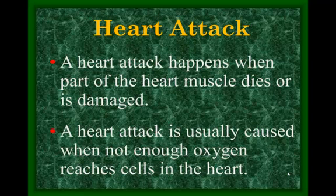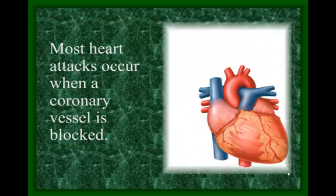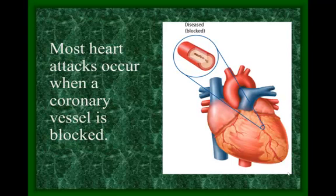A heart attack, also known as coronary thrombosis, happens when part of the heart muscle dies or is damaged, usually caused by insufficient oxygen reaching the cells. A blocked coronary artery leads to less blood and less oxygen. If an aneurysm bursts, blood pools around the heart instead of reaching the muscle. When bypass surgery is performed, surgeons take an artery — usually from the leg — and bypass wherever the blockage is.